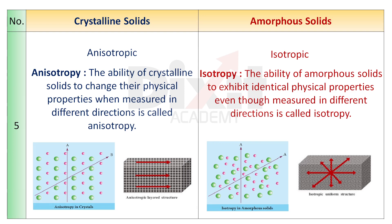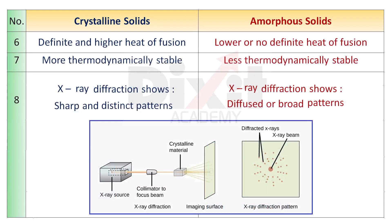Point number 6. Crystalline solids have a definite and higher heat of fusion. Amorphous solids have lower or no definite heat of fusion.